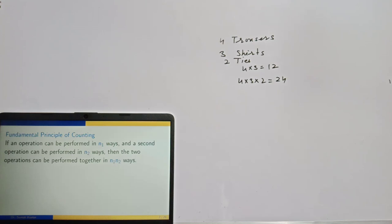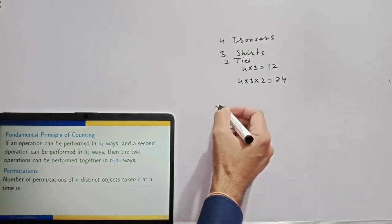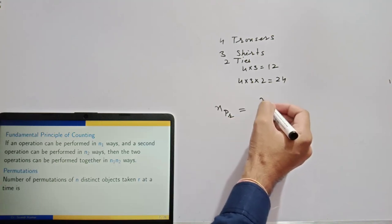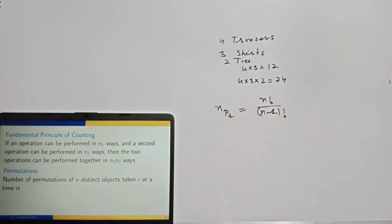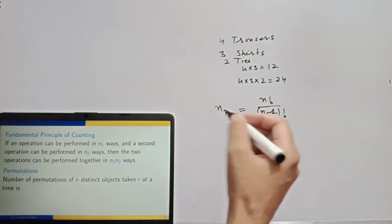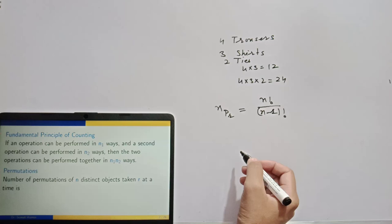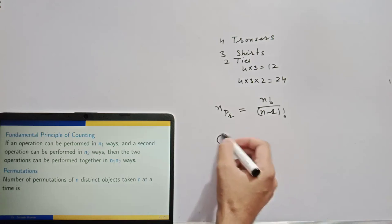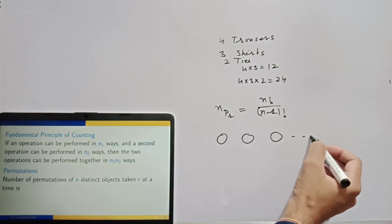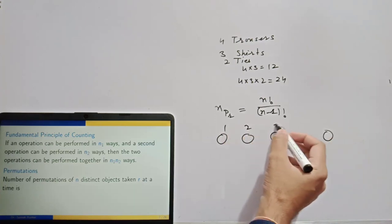The Fundamental Principle of Counting also helps you in calculating permutations. What is permutation? The number of permutations of N distinct objects taken R at a time is given by the formula NPR, which is N factorial over N minus R factorial. To understand why, see how the Fundamental Principle of Counting works here. R things are taken at one time, so you have R slots or R places: 1, 2, 3, up to R.